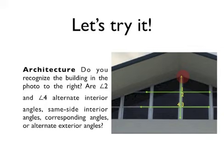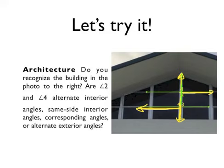So let's take a look. Angle two is created by using this ray here and this ray here. And angle four is created by using these two rays. And where is the transversal? It's this line right here.